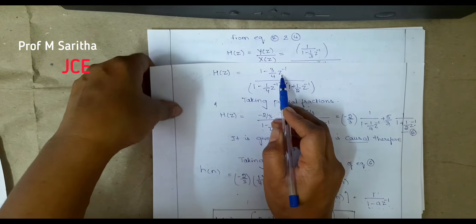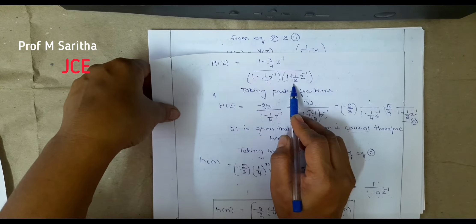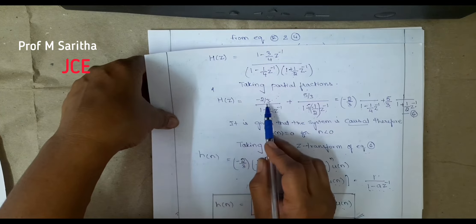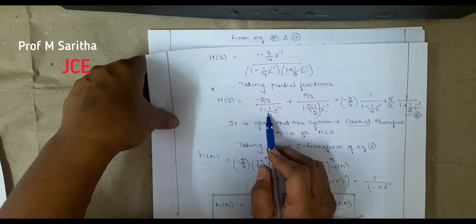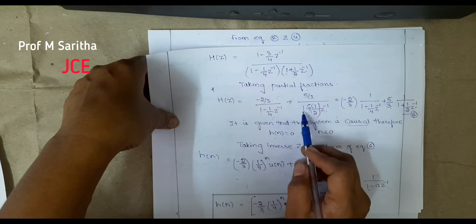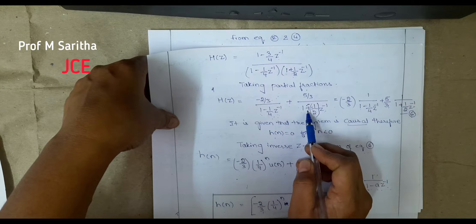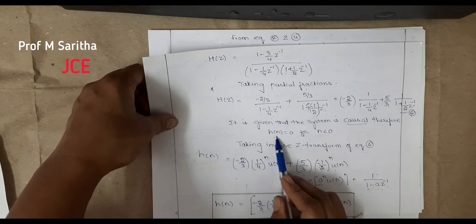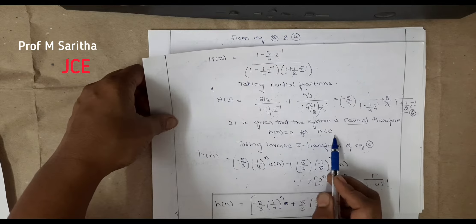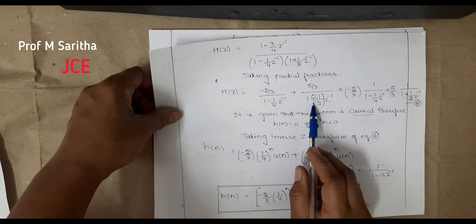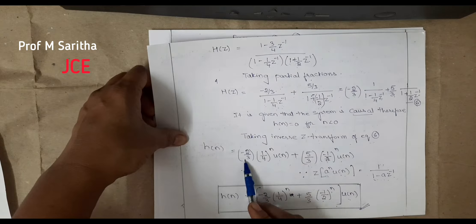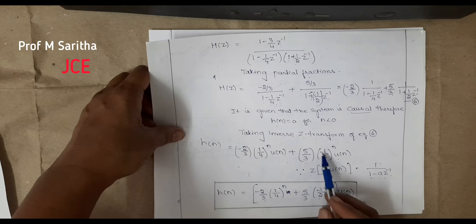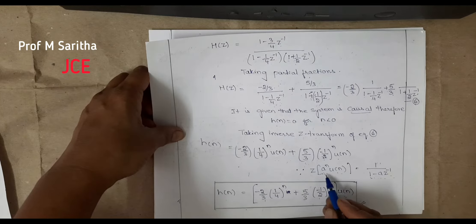Factorizing the denominator and taking partial fractions, H(z) = (1 − (3/4)z^(−1)) / [(1 − (1/4)z^(−1))(1 + (1/2)z^(−1))]. Taking partial fractions: H(z) = (−2/3) / (1 − (1/4)z^(−1)) + (5/3) / (1 + (1/2)z^(−1)). Since the system is causal, h(n) = 0 for n < 0. Taking the inverse Z-transform, h(n) = (−2/3)(1/4)^n u(n) + (5/3)(−1/2)^n u(n).